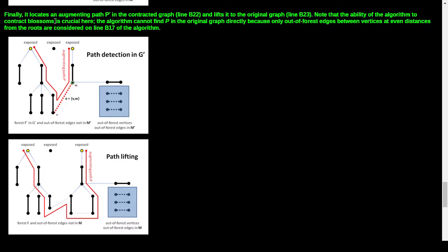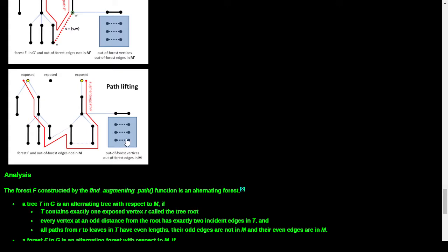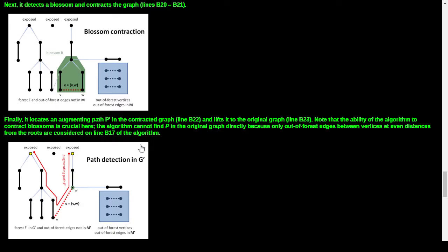What I don't understand is what we mean by contracting the blossom. We found this cycle, but it's not connected to anything else. Now that we've found it, we take this cycle and remove it from the graph. Instead, this edge connects there in place of where the blossom used to be. So we've contracted the blossom out, giving us a potential augmenting path. We have two exposed vertices of the same color, and by lifting the path we re-inject the blossom in a different way.